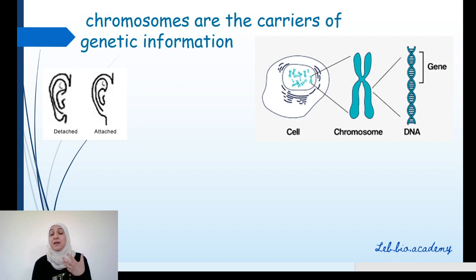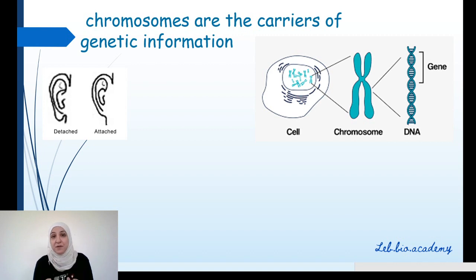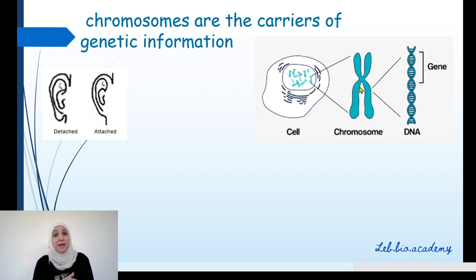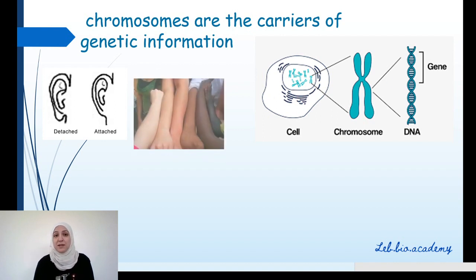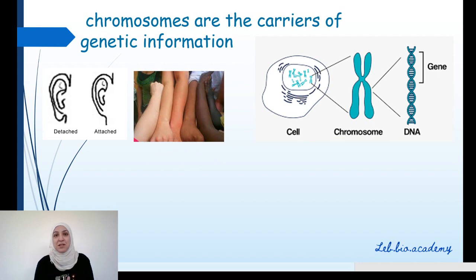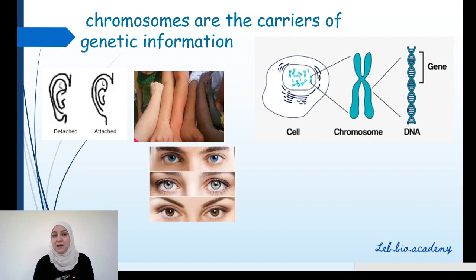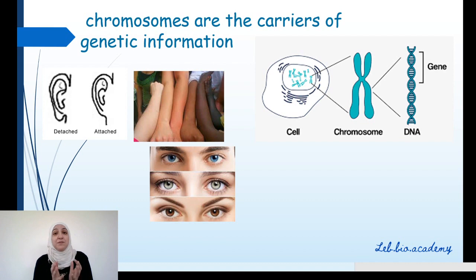The earlobe type is called genetic information. Genetic information is a character or a trait where the information of that trait is found in the chromosome. Other examples of genetic information include skin color and eye color — traits that define you.